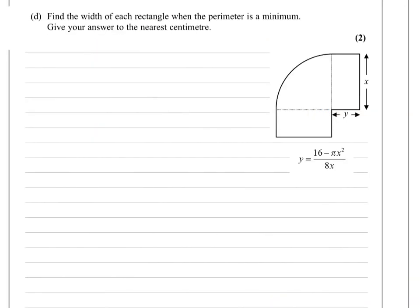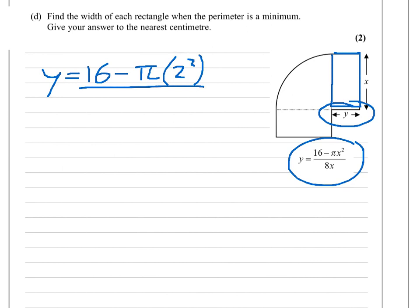The final part, for a very easy 2 marks, asks you to find the width of each rectangle when the perimeter is a minimum. Obviously, the width they're talking about is y. So, you look around your page and you see a formula for y. We've already said that x must be 2. So, we simply substitute that in. 16 minus pi times 2 squared, all divided by 8 times 2. The question says, give your answer to the nearest centimetre. You could play around with this and tidy it up, or you could simply type it straight into your calculator. And when I do that, the answer I get to the nearest centimetre is 21 centimetres. Very easy, very quick. Make sure you get those final marks.